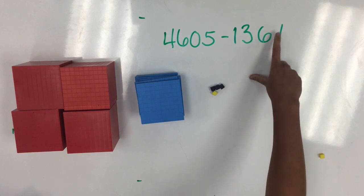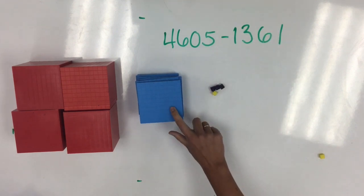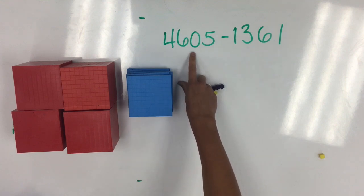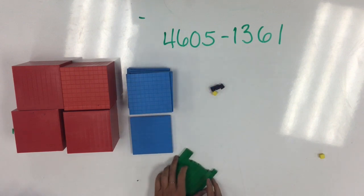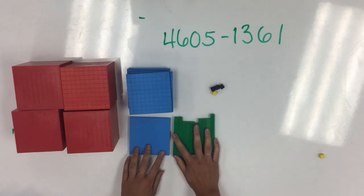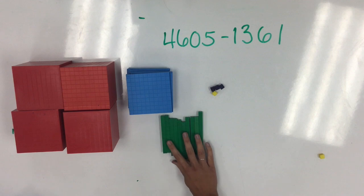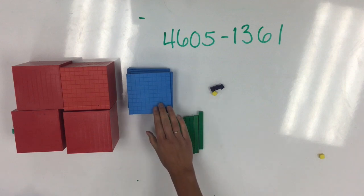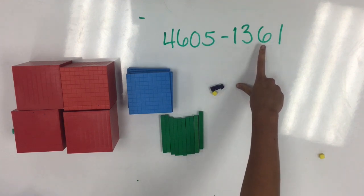However, in my starting number, I have a 0 in the tens place. Remember, we can easily solve this problem by exchanging one of our groups of 100 for 10 groups of 10. Remember, this hasn't changed our number at all — I still have 6 hundreds. It just looks a bit different and makes it much easier for me to take away 6 groups of 10.